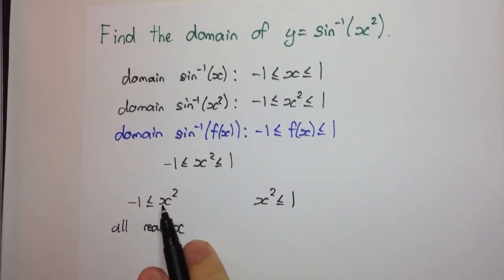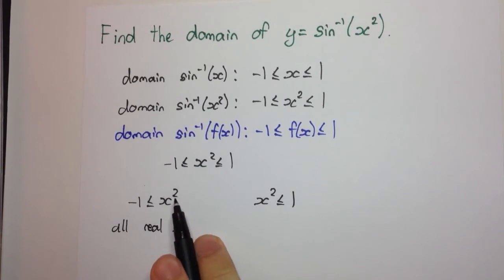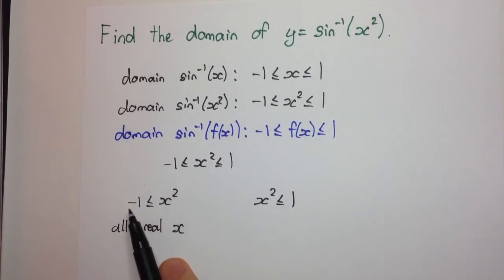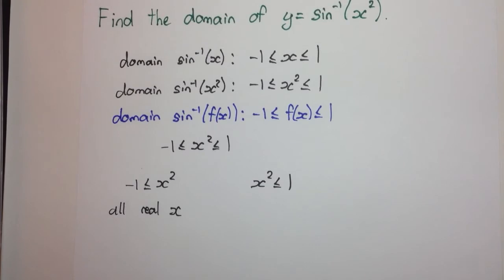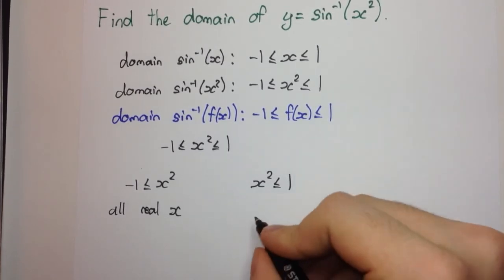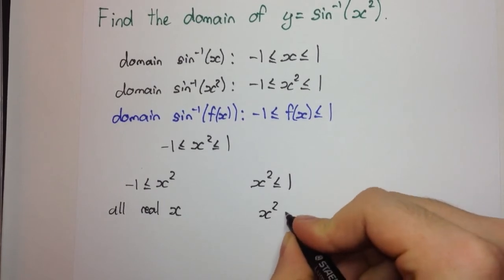Because x squared is always greater than 0, so if it's greater than 0, it's definitely greater than minus 1. Now here, how do we solve x squared less than or equal to 1? Some of you might know this, but if you haven't, or if you forgot how to solve something like this, this is how I like to solve it.